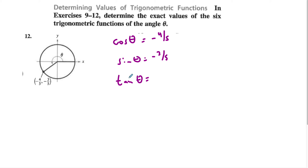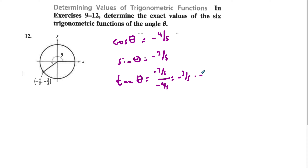The tangent would be the ratio of sine and cosine, so sine over cosine: negative 3/5 over negative 4/5, which equals negative 3/5 times negative 5/4. Negative times negative is positive, the 5's cancel, so it is 3/4.